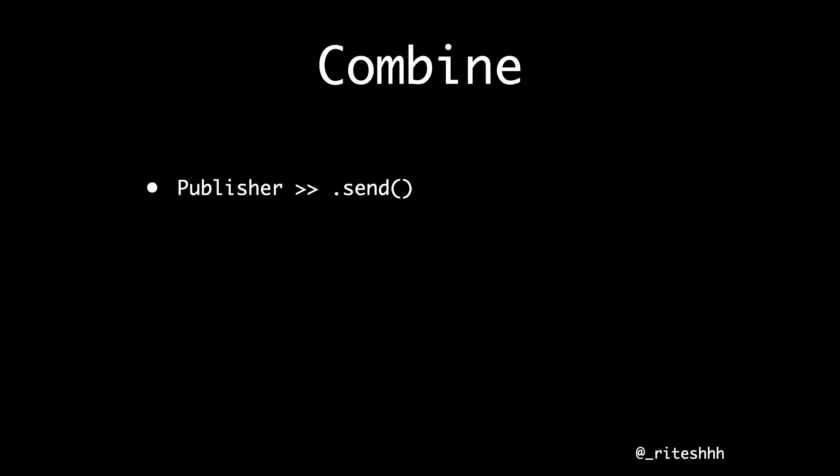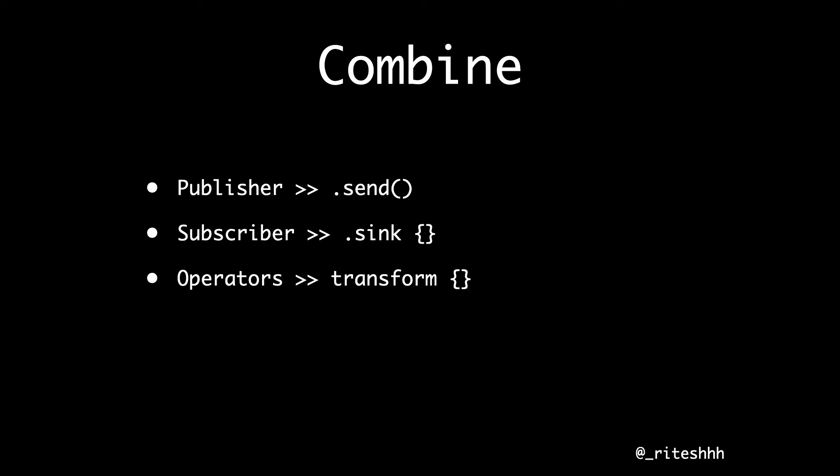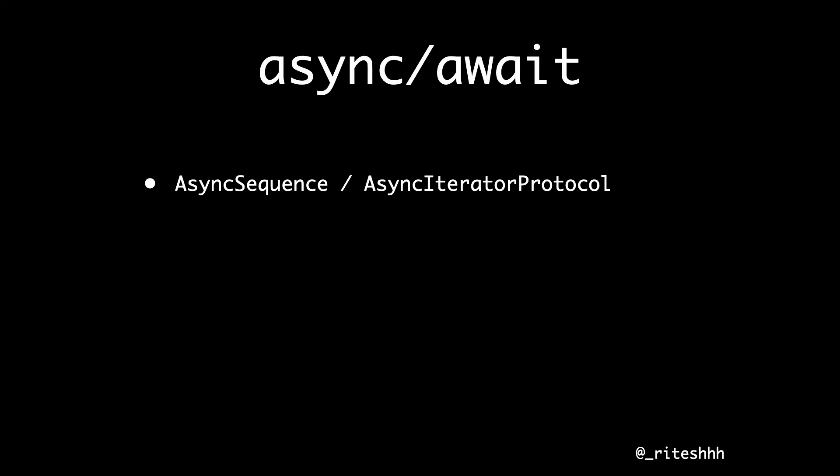Moving on to streams of values. Combine is famous for its publisher pattern — publisher is used to send values, subscriber will listen to the values, and operators play in the middle to transform values from A to B. In typical Combine code, you have a publisher followed by some operators like filter and map, and then you listen to it and store in a cancellable to cancel things later.